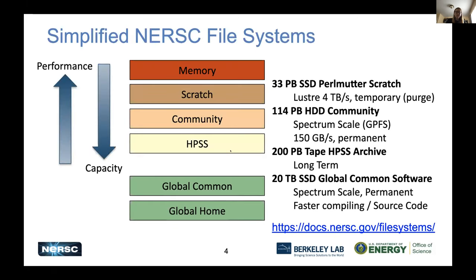Let me give you a quick overview of the file systems we have at NERSC. Like a number of other centers, we have a tiered file system where at the peak the highest layer — the most performant layer — is generally the smallest in capacity. That's because it costs a lot of money to get performance, so you trade performance for capacity.